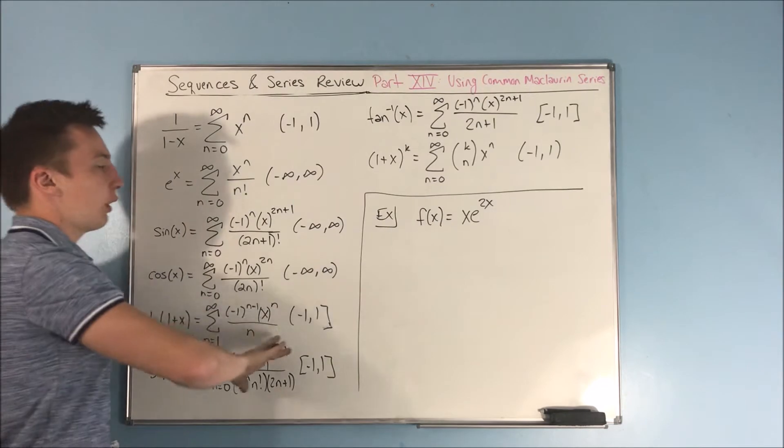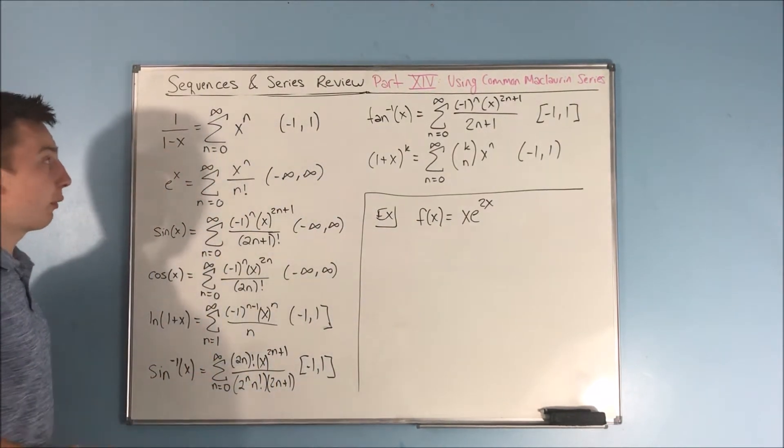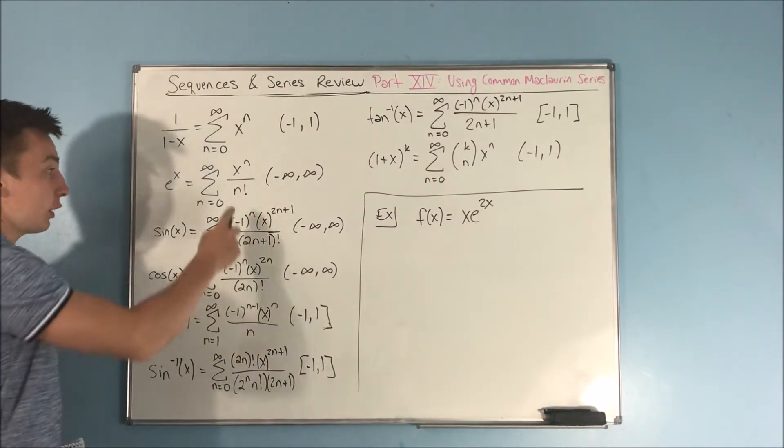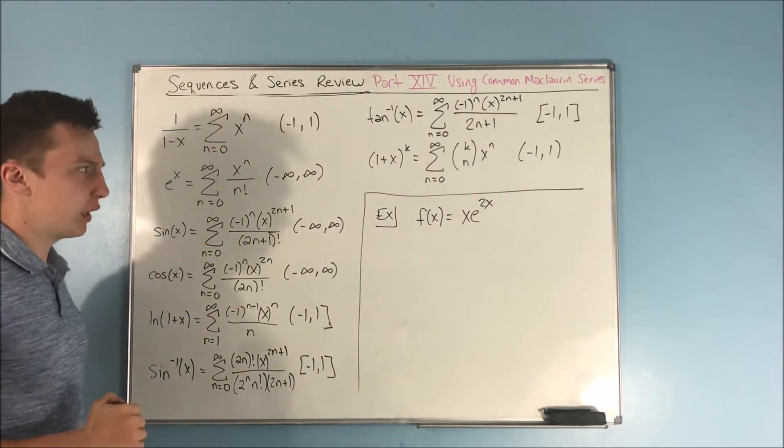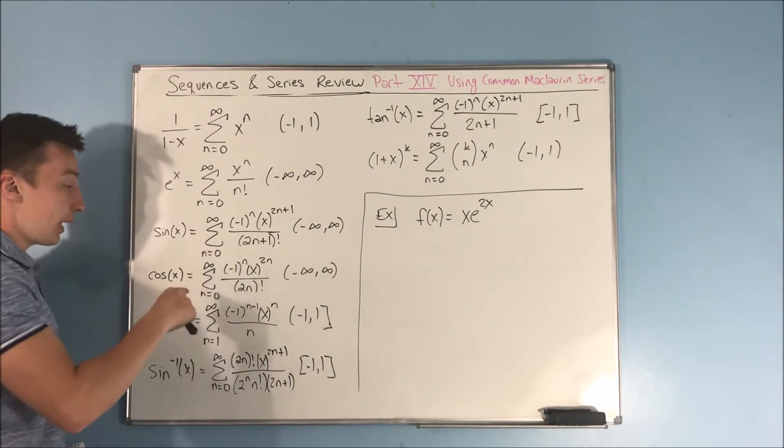So here is your list of all of your common Maclaurin series, most of which we've had some experience with before. We started off with 1 over 1 minus x, we've talked about a to the x in some other videos before, not review videos I don't believe.